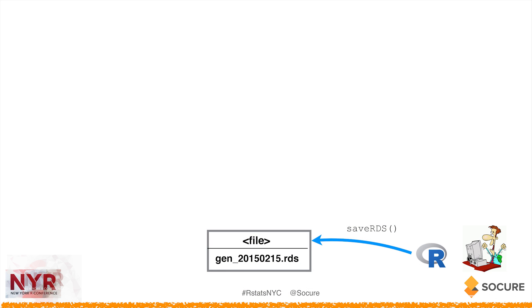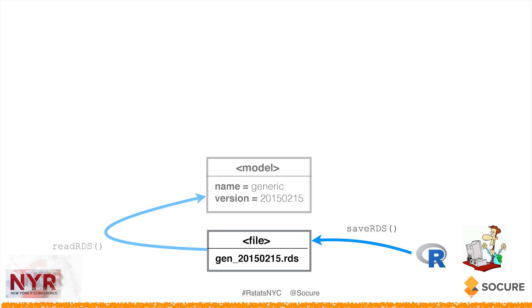The application is very simple. The real intelligence is in the models, which are built by the data scientists, tested, validated — we pick the best models and best features. That's the normal data science modeling workflow. Once we arrive at a model we like, we serialize it and save it as an RDS file. Those models are then dropped inside a model directory within the application. When the application starts up, it looks in the model directory, looks for RDS files, and reads them in.